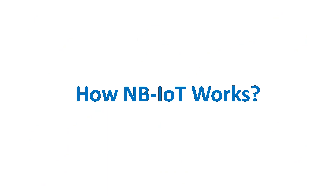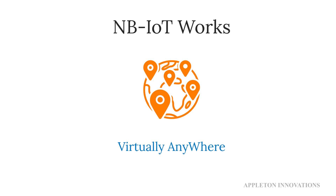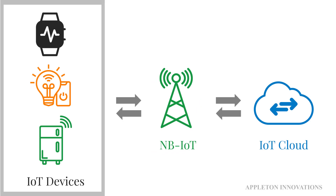The strength of NB-IoT is that it can work virtually anywhere in the world. It is a simple, efficient way of connecting devices on already established cellular networks. There is no interference with other devices, so NB-IoT guarantees more reliable data transfer. Devices can send data directly to the cloud without needing IoT gateways.